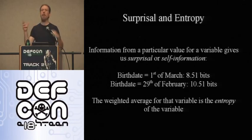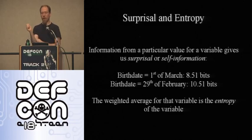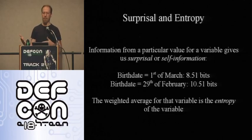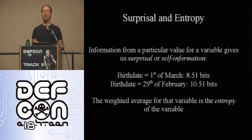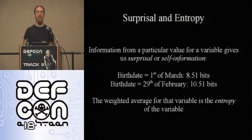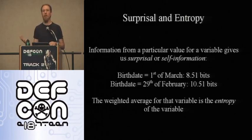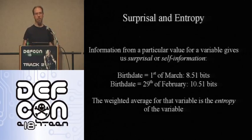For a random variable like birth date, you can talk about the amount of information you learn when you observe a particular value. If you learn my birth date is the first of March, you've learned 8.51 bits about my identity. However, if you learn my birth date is the 29th of February on a leap year, you get a bit more information — about 10.51 bits — because the likelihood of that being true is only a quarter of any other birthday.